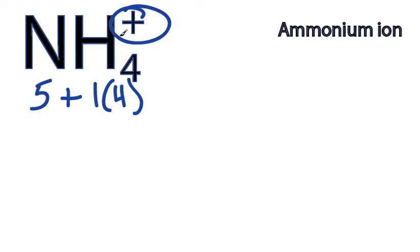And if you see a plus sign, that means you've lost a valence electron. So we've lost one, let's minus 1. And 5 plus 4 is 9, minus 1, that's going to be 8. So we have 8 total valence electrons.